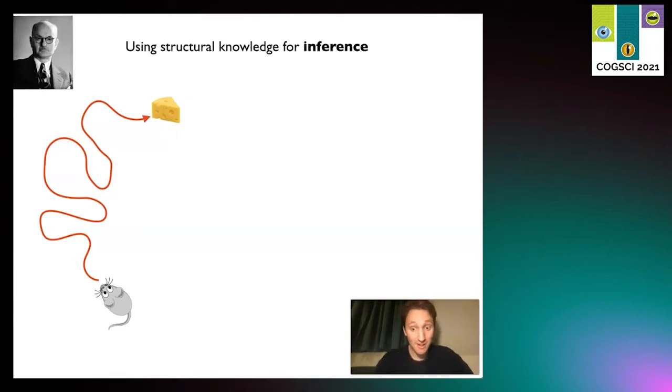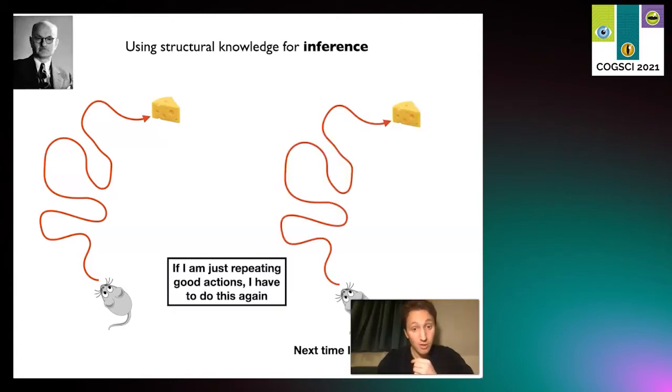At some point the animal reached a nice bit of cheese or reward. The animal was very happy to get that, so next time it was placed back in the environment, it thought to itself, I'd quite like some cheese. It could just repeat all the same actions, taking that torturous red path again to get back to the cheese.